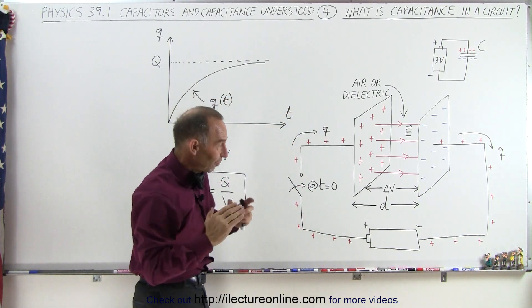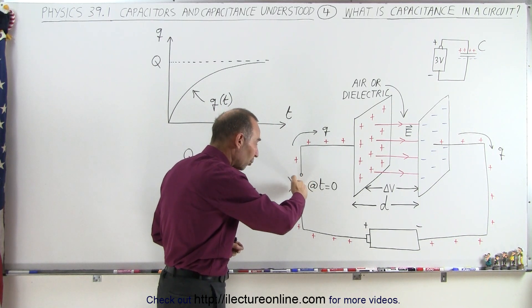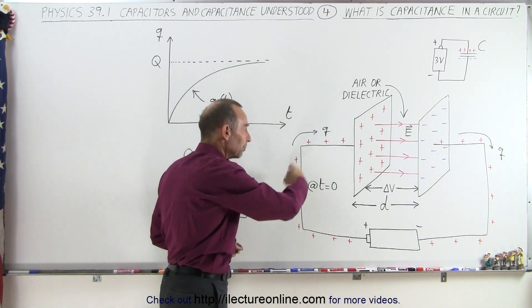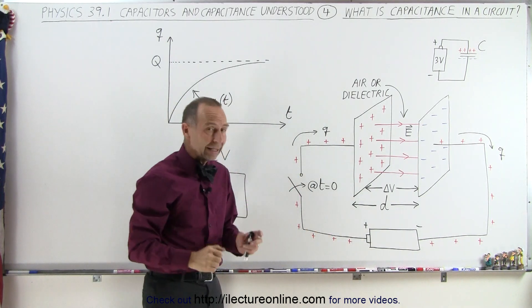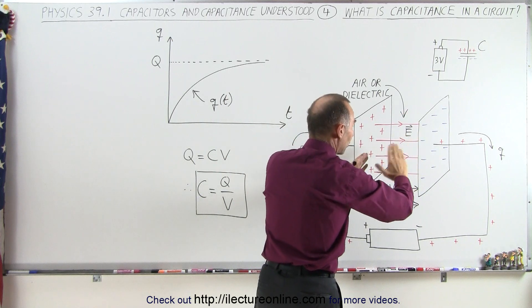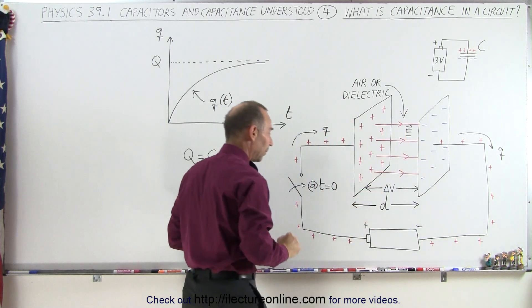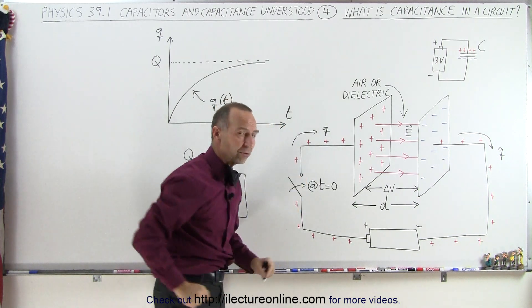Now, before this process starts, we have placed a switch in there, and when we open the switch, no charges can get pushed onto the capacitor plate, because there's no path for them to follow. And let's assume that we start with capacitor plates that have no charge on them whatsoever. The battery is connected, but the switch is open, so no charge can flow.